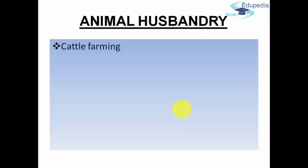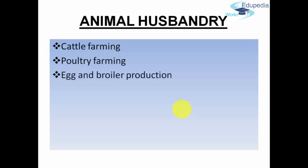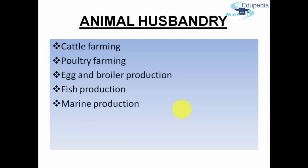Animal husbandry also includes cattle farming — which covers the cow, buffalo, horses and yaks — poultry farming, egg and broiler production, and fish production. Then comes marine production, where we talk about fishes. We also have inland fisheries and beekeeping. Beekeeping is called apiculture, wherein the bees are given a shelter and the honey is extracted.